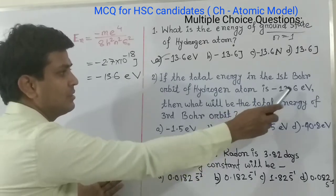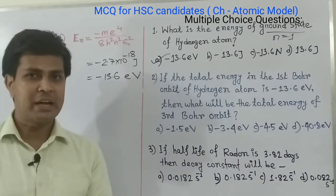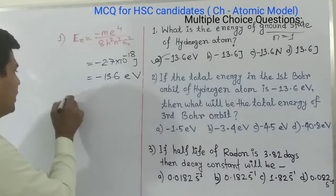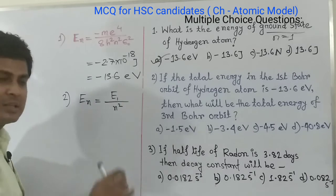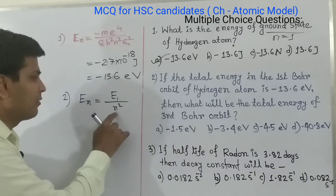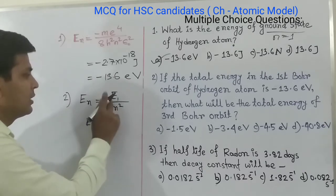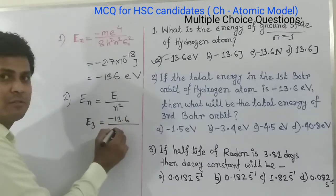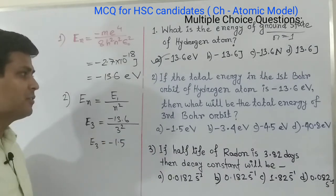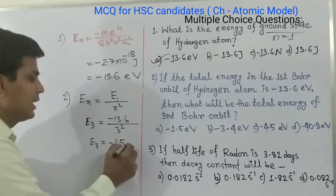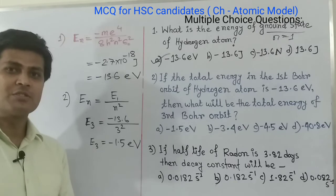MCQ 2: If the total energy in the first Bohr orbit of hydrogen atom is minus 13.6 electron volt, what will be the total energy of the third Bohr orbit? Using the formula En equals to E1 divided by n squared, we calculate E3 equals to minus 13.6 divided by 3 squared, which gives minus 1.5 electron volt. The energy of the third Bohr orbit is minus 1.5 electron volt, so the first option is the correct answer.